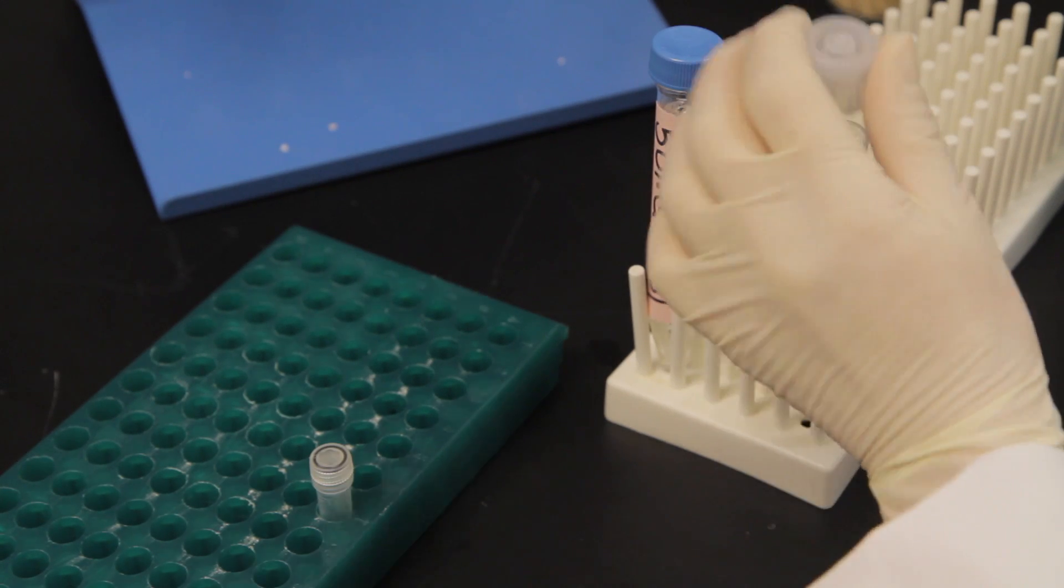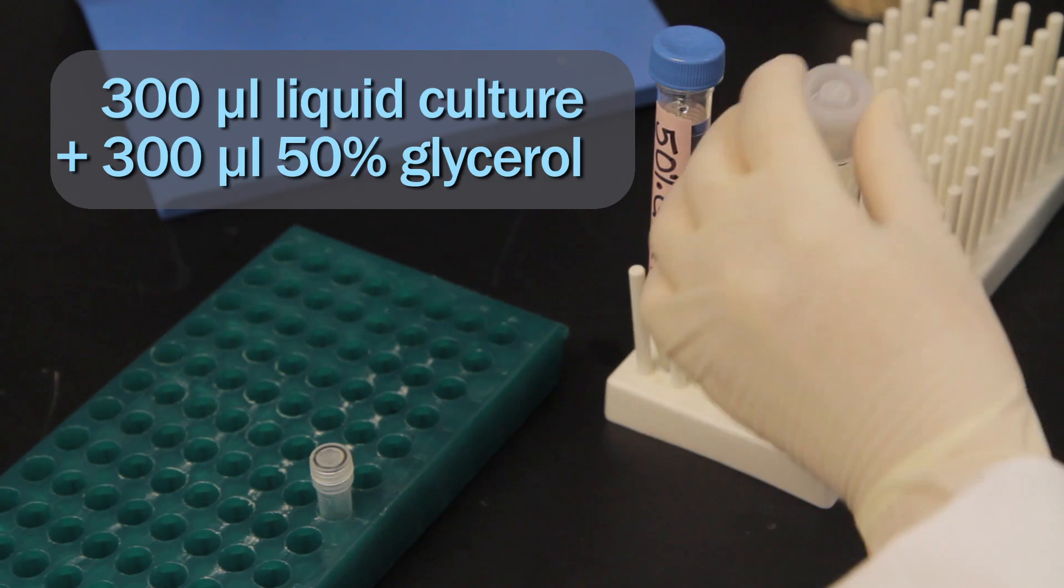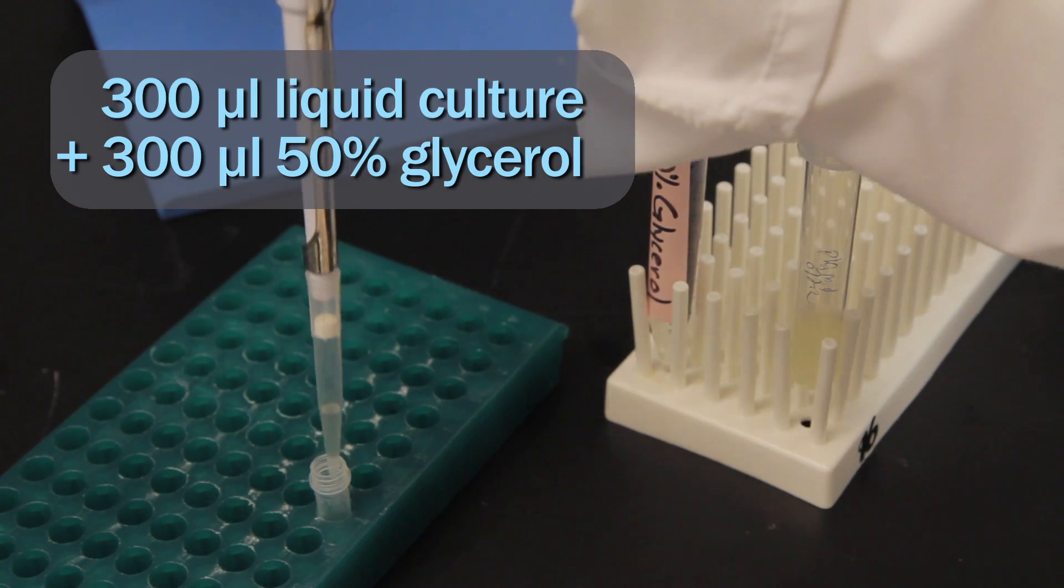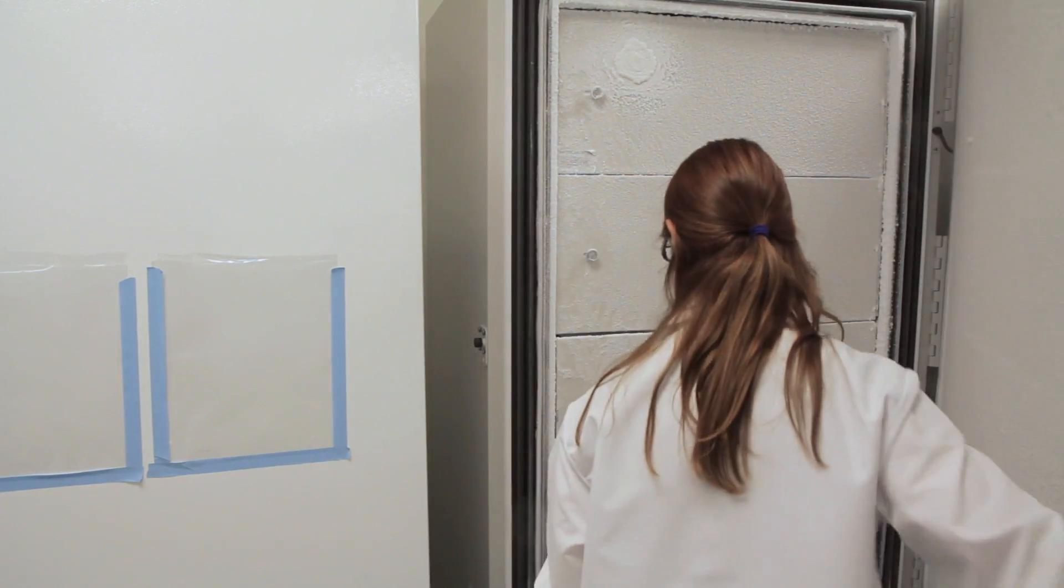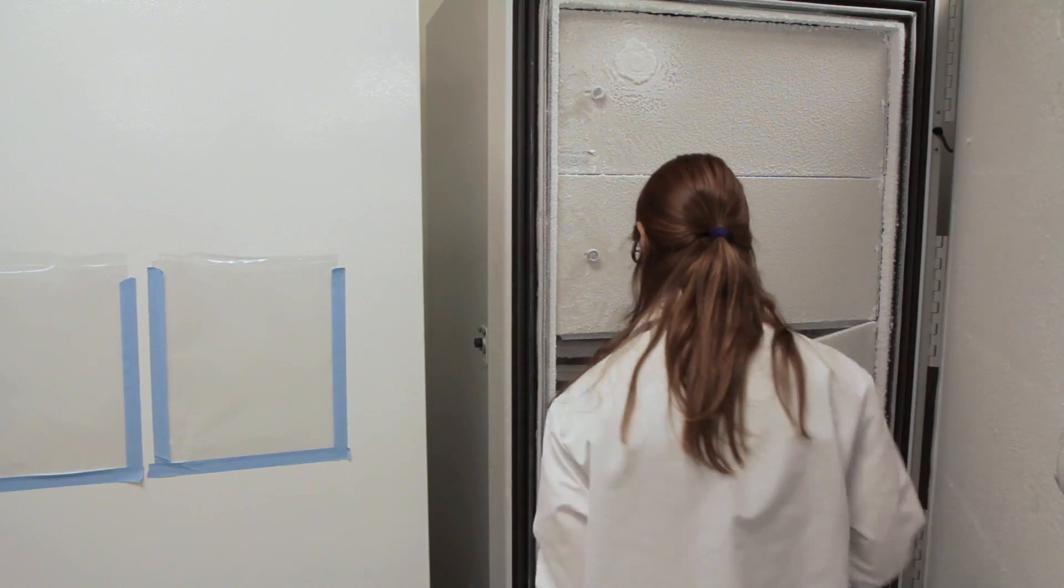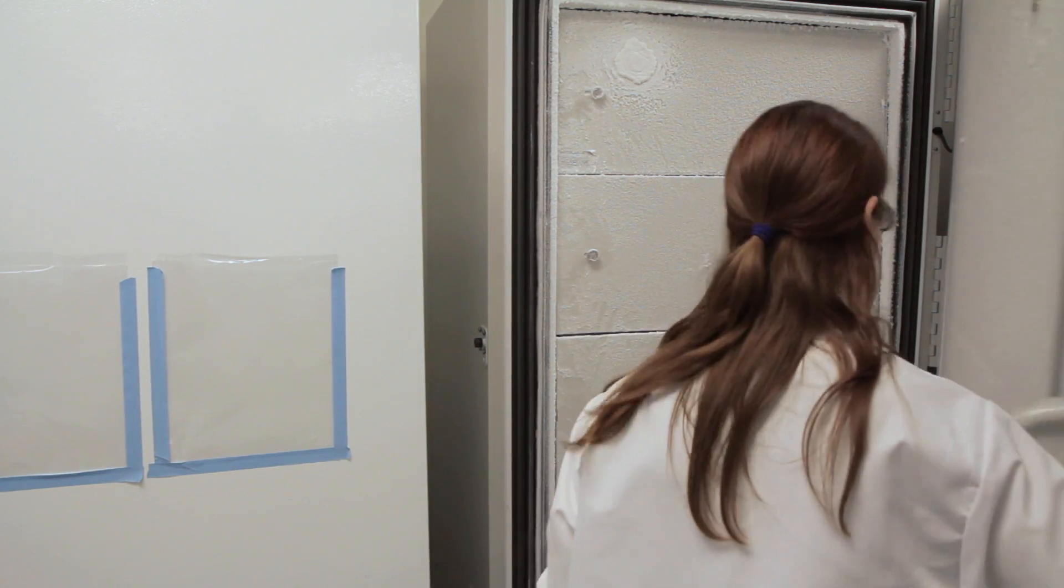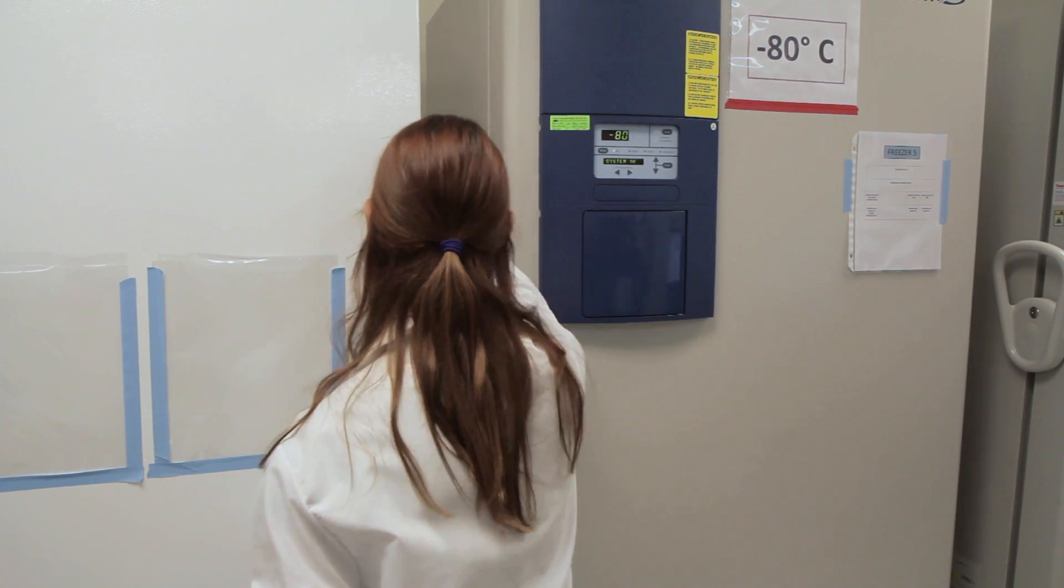Use the bacterial culture to create glycerol stocks by mixing 300 microliters of the culture with 300 microliters of 50% glycerol and storing at minus 80 degrees Celsius. Bacterial glycerol stocks are usually an excellent way to store your plasmids for the long term.